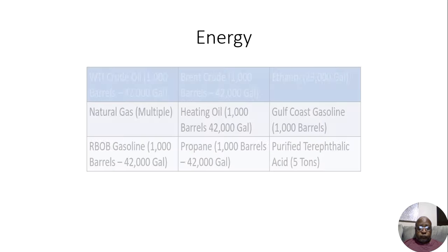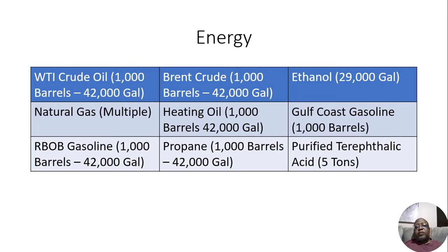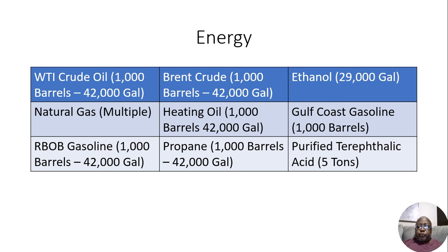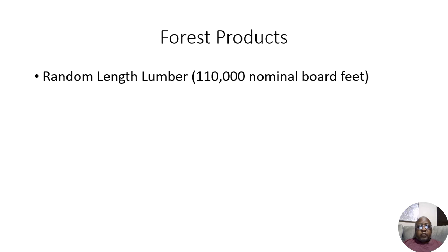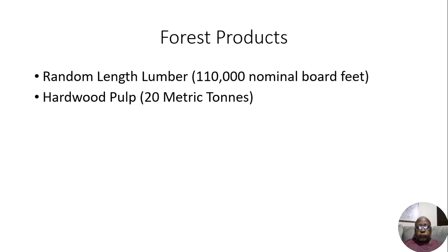The next category is energy. We have WTI crude oil, Brent crude oil, ethanol, natural gas, heating oil, Gulf Coast gasoline, RBOB gasoline, propane, and purified terephthalic acid. Then we have forest products: random length lumber, hardwood pulp, and softwood pulp.